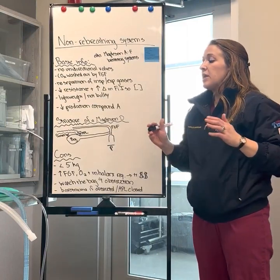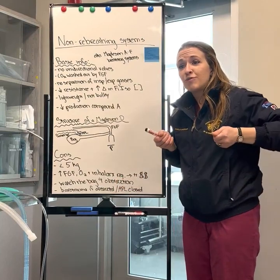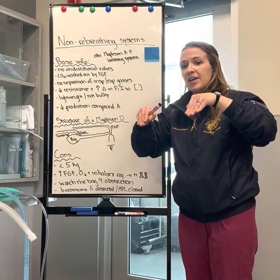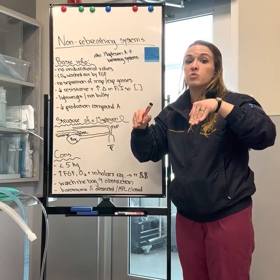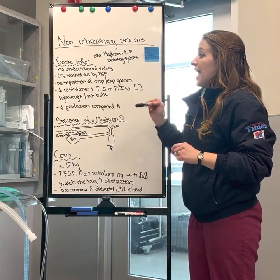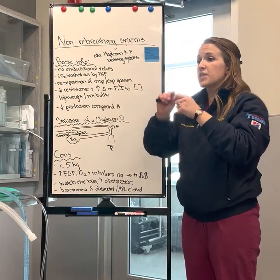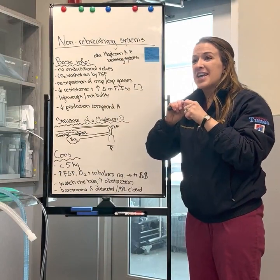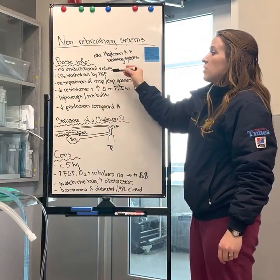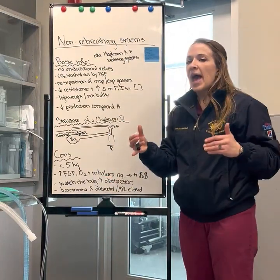Non-rebreathing systems do not rely on the presence of unidirectional valves. In a circle breathing system, you have two ends plugged into the machine with an inspiratory valve and an expiratory valve that control fresh gas flow and direct CO2 to the scavenging system and soda canister respectively. In the non-rebreathing system, because we use a high fresh gas flow rate and there is no soda canister, we do not need unidirectional valves. Carbon dioxide in this type of breathing system is washed out by high fresh gas flow rates.